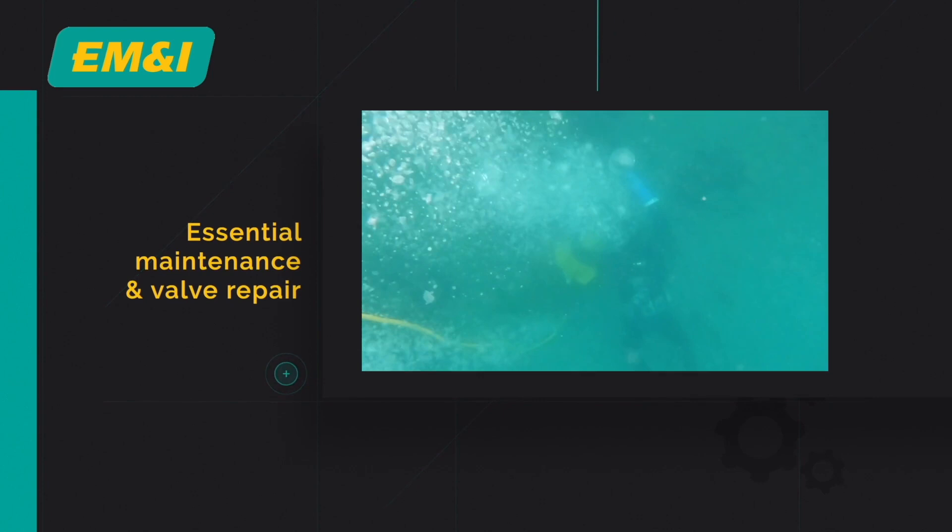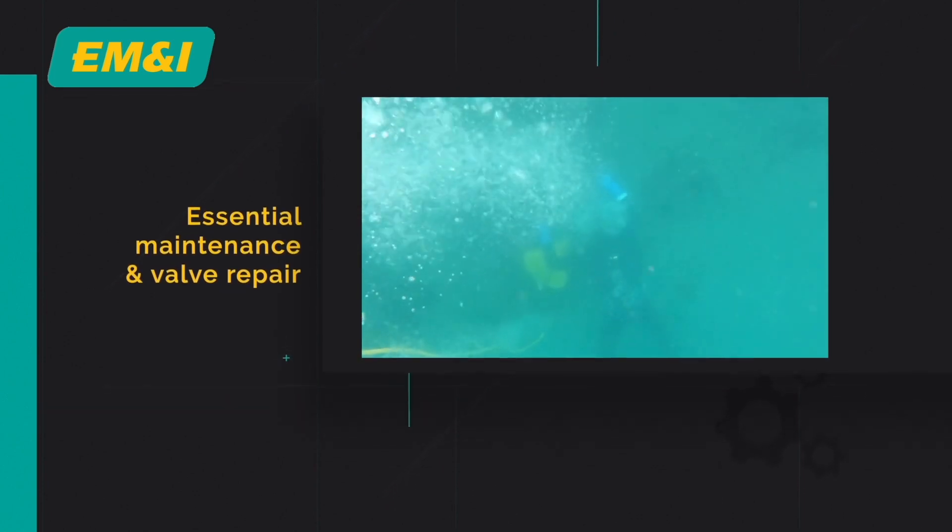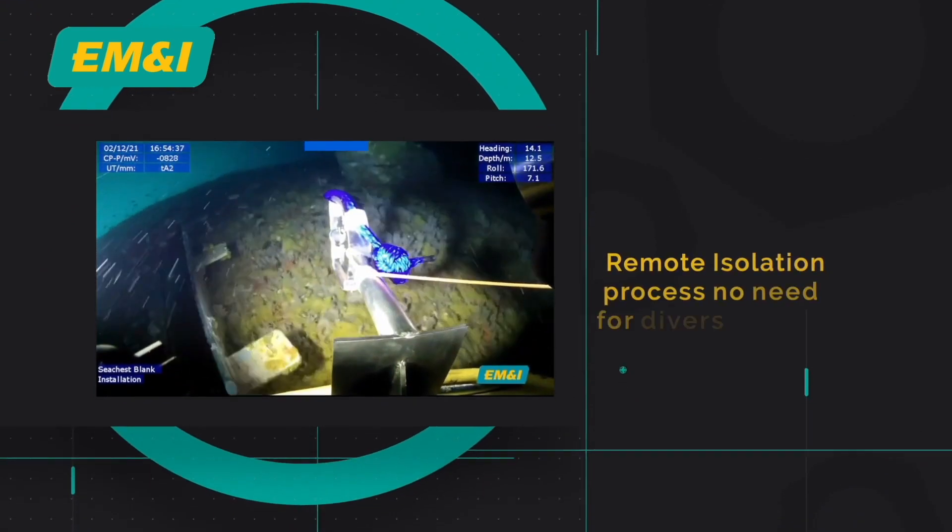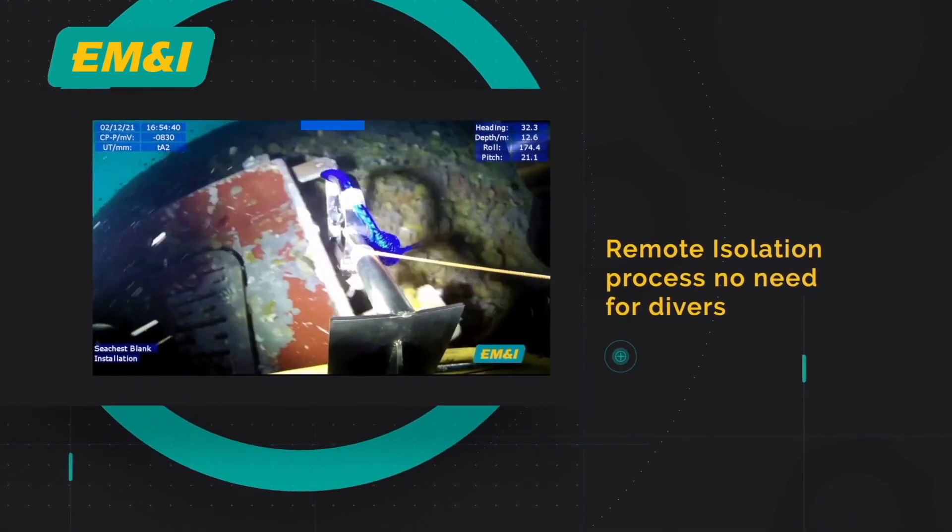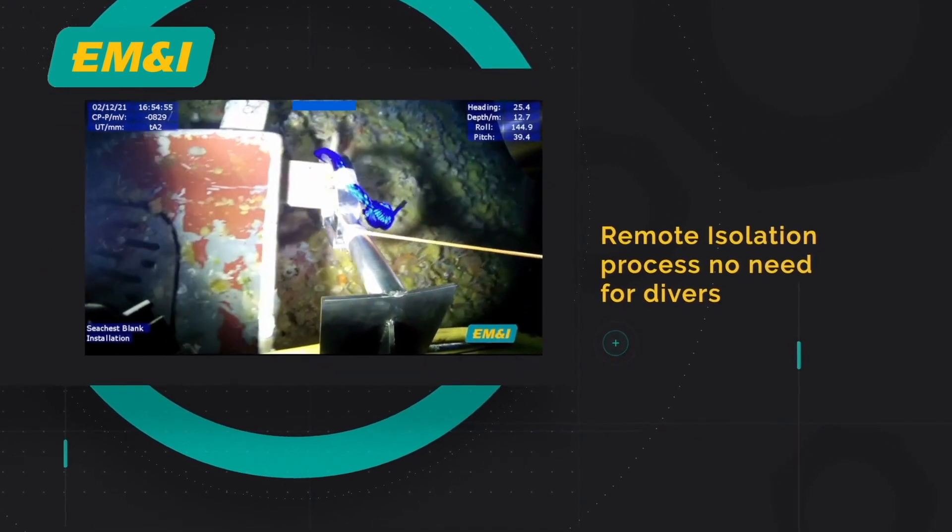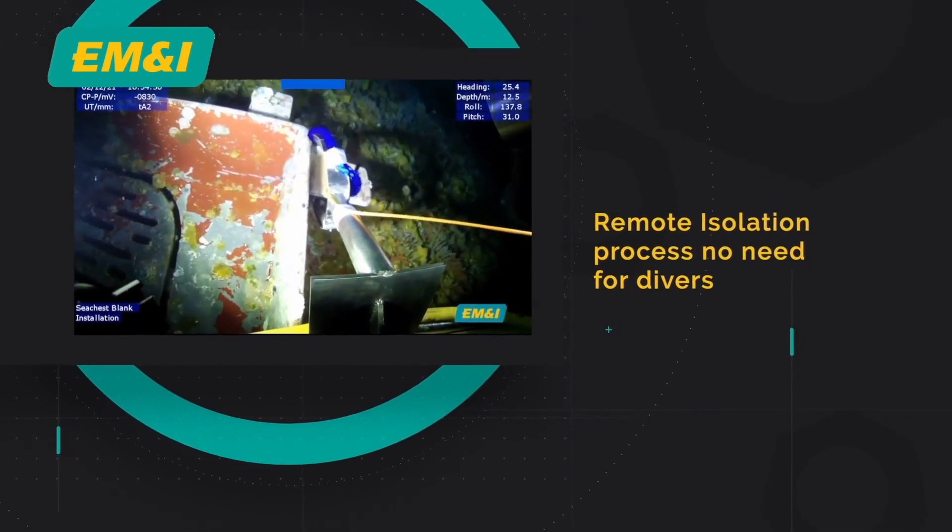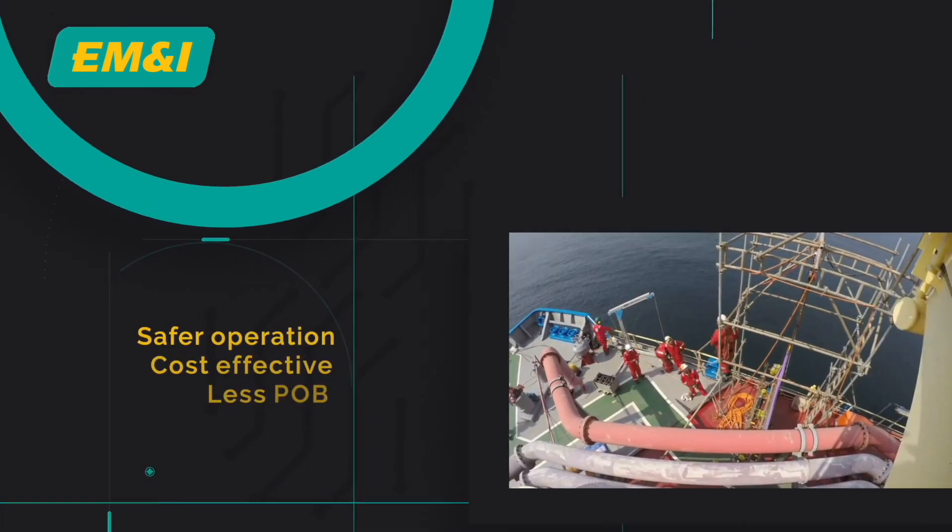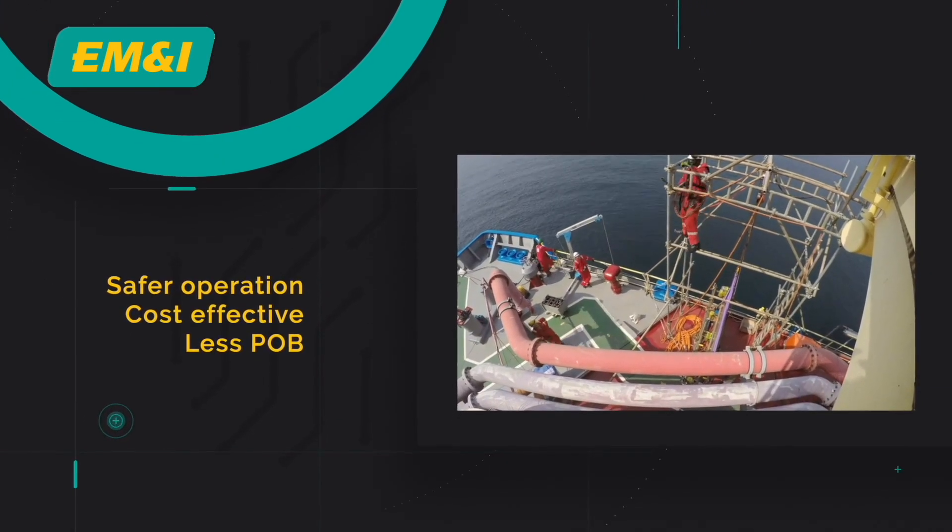At EM&I, we're delivering a unique and innovative remote isolation and cleaning process called the Limpet Intelligent Sea Chest Blanking System, eliminating the need for divers, meaning it's a much safer operation. The cleaning can also include the removal of invasive marine growth if required.